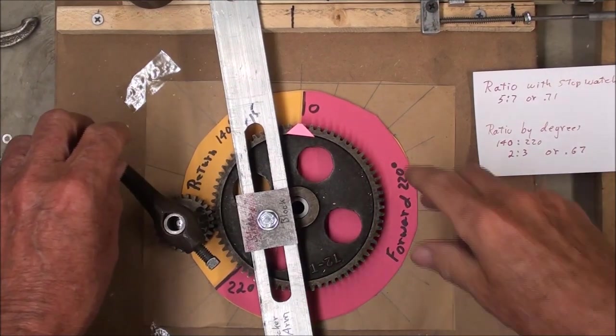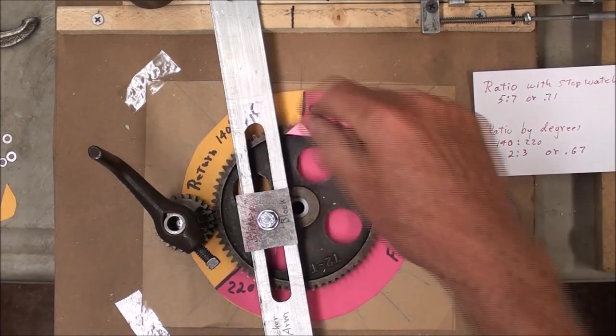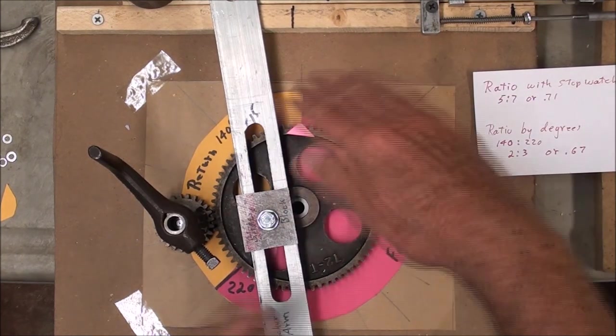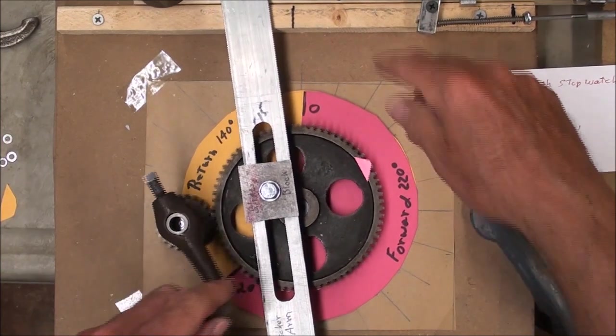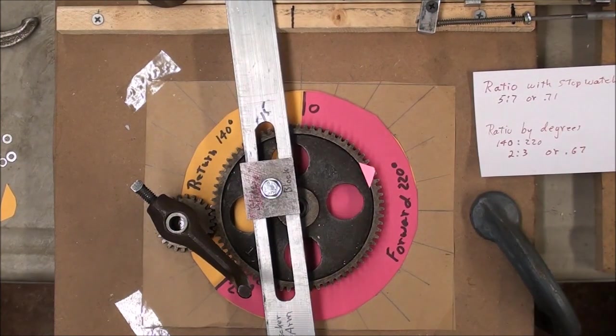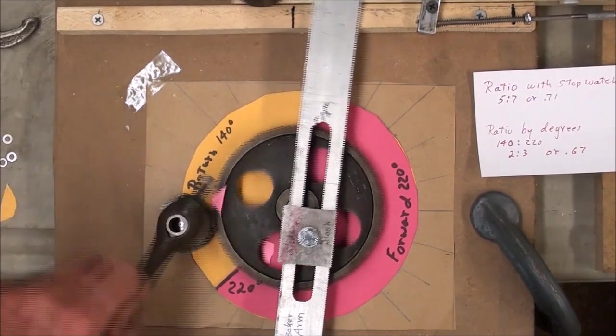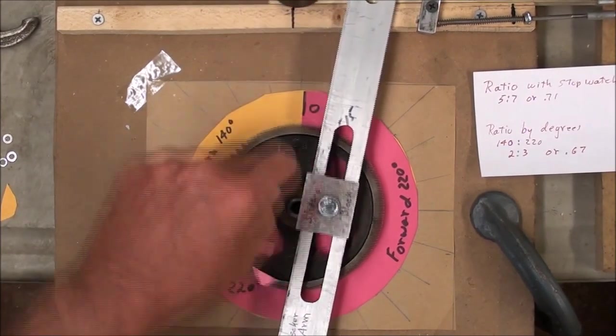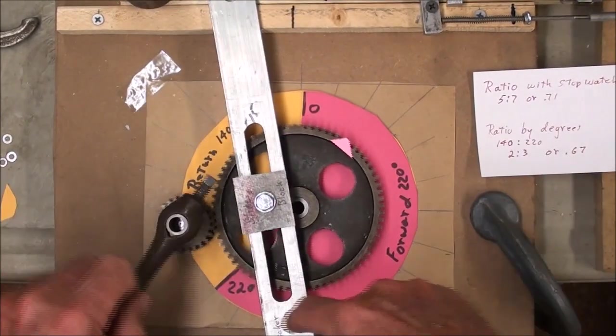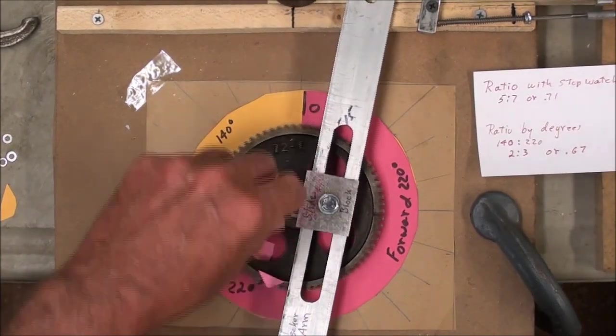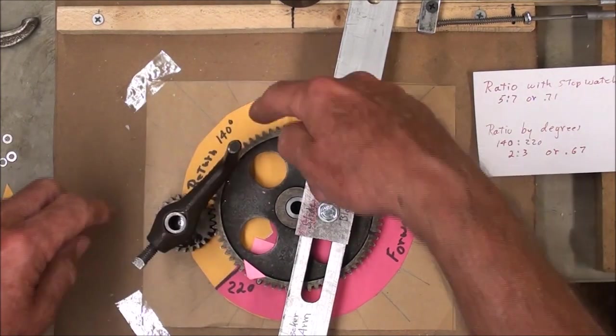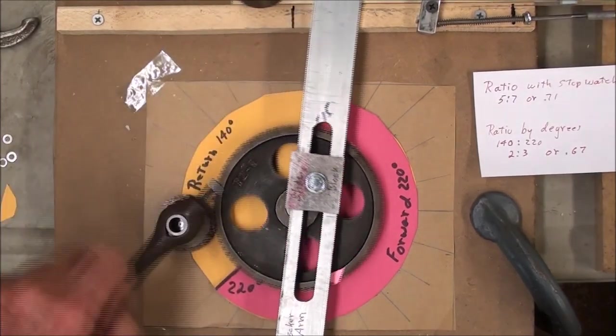For my next trick here, I put some colored paper here, so that you can see the number of degrees in the forward stroke, almost like a graph, as compared to the number of degrees here in the yellow paper, which is about 140 degrees. And a little pointer on the gear, so you can see that the pink color here is the proportion of cutting time, and the yellow, the proportion of return, roughly.